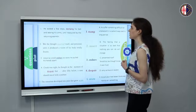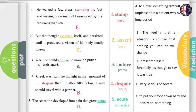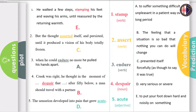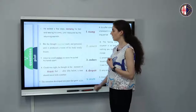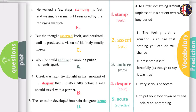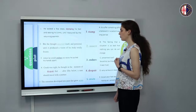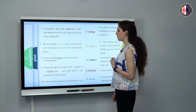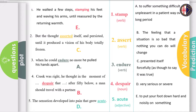Let's look at them together. 'He walked a few steps, stamping his feet and waving his arms until reassured by the returning warmth.' Let's look at the second one: 'But the thought asserted itself and persisted until it produced a vision of his body totally frozen.' 'When he could endure no more, he pulled his hands apart.' And: 'Crick was right, he thought in the moment of despair, that after 50 below, a man should travel with a partner.' And the last one: 'The sensation developed into pain that grew acute.'